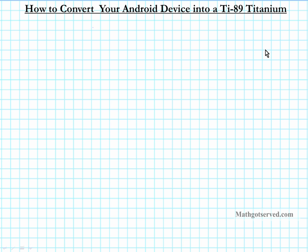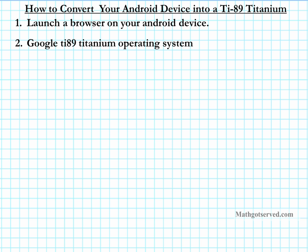You should be able to execute this in less than two minutes. First of all, you want to launch a browser within your Android device — cell phone, tablet, or whatever browser you normally use. Then go to google.com and search. Type in 'TI-89 Titanium Operating System' as your search query, and then hit search.